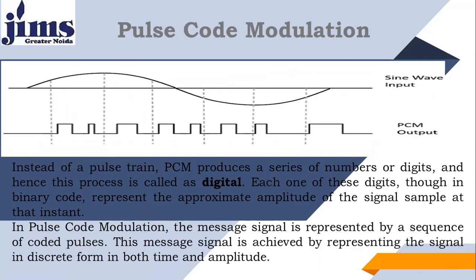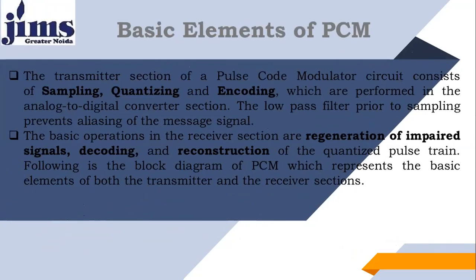Each digit, in binary code, represents the approximate amplitude of the signal at that instant. The output of PCM is a train of zeros and ones that represents an analog signal at every instant. In pulse code modulation, the message signal is represented by a sequence of coded pulses, achieved by representing the signal in discrete form in both time and amplitude. This PCM system has two sections: PCM transmitter side and PCM receiver side, with a channel in between.